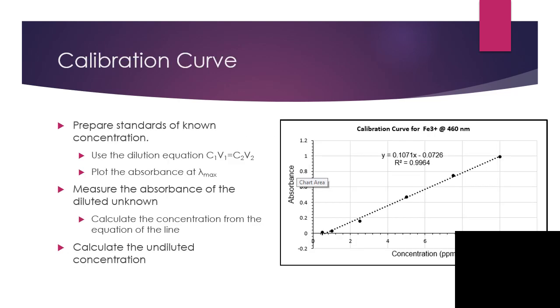The way that we find the unknown concentration is we have to start by preparing standards of a known concentration. The known concentration, you're going to be starting with a stock solution that you know its concentration, and this needs to be prepared of the same metal nitrate that your unknown is.